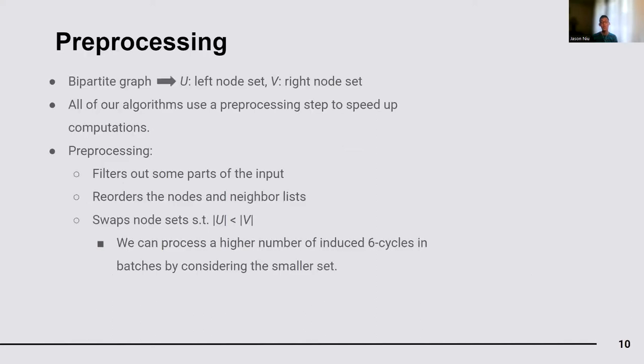All of our algorithms make use of a generic preprocessing step which transforms the graph to speed up computations. Since all nodes in induced six-cycles must have at least two neighbors, preprocessing begins by filtering nodes until all the remaining nodes have a degree of at least two. Then, it sorts the nodes in neighbor lists and ensures that the left set U is the smaller set. Since we parallelize our algorithms based on U, making it the smaller set increases the number of induced six-cycles that are processed in batches for each thread.